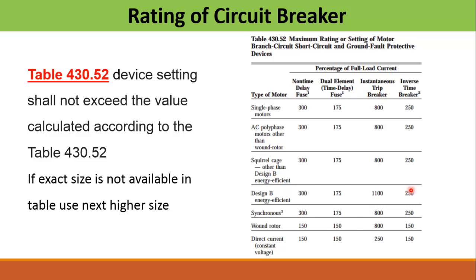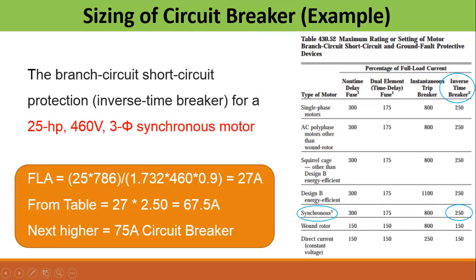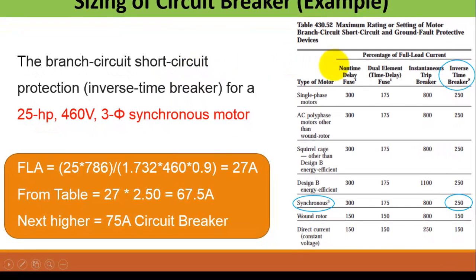Let's solve an example to understand how to properly size a circuit breaker. The motor type is a three-phase synchronous motor and the protective device is an inverse time breaker. From the table, this corresponds to 250% of the full load current. Using the power formula, the full load current is calculated to be 27 amperes. Multiplying by 2.5 gives 67.5 amperes. Since 67.5 is not a standard circuit breaker rating, we select the next higher standard size, which would be 70 or 75 amperes.